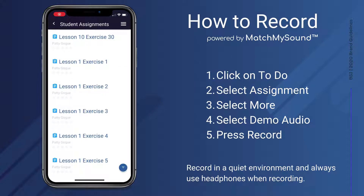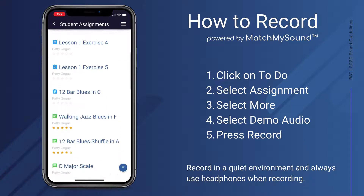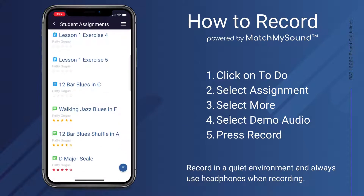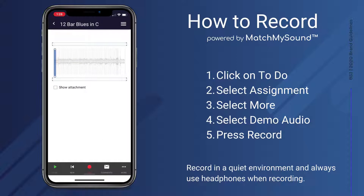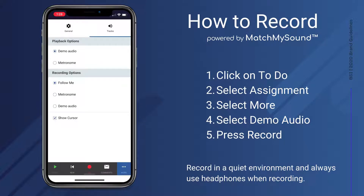Select To Do. Scroll to the lesson you would like to record. On the lower right side of the screen press More. At the top right of the screen select Tracks, then select Demo Audio.